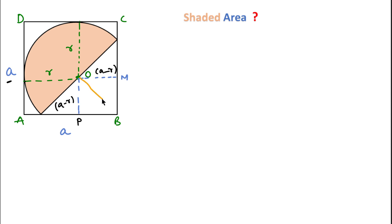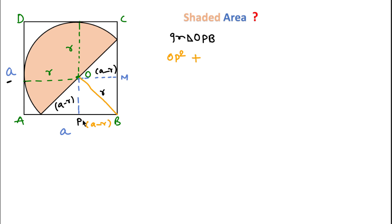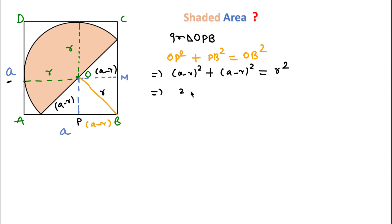Now I connect O to corner B. In the right angle triangle OPB, PB equals a minus r and OP equals a minus r. Using the Pythagorean theorem, we can write: OP² + PB² = OB², which gives us (a minus r)² plus (a minus r)² equals OB².